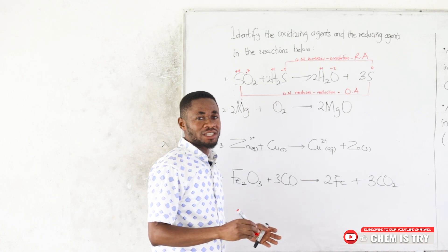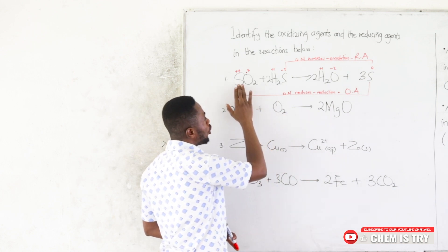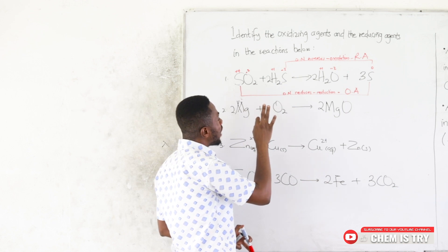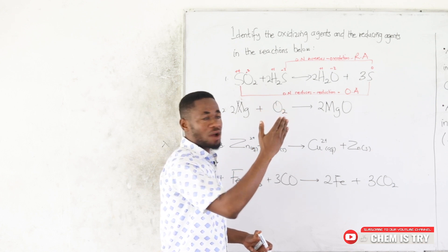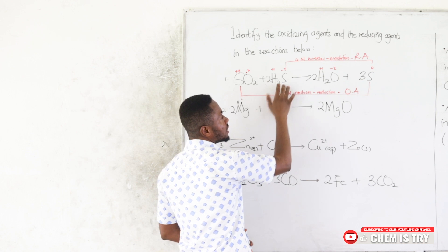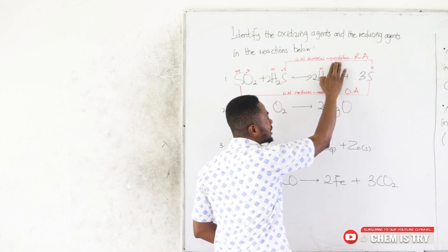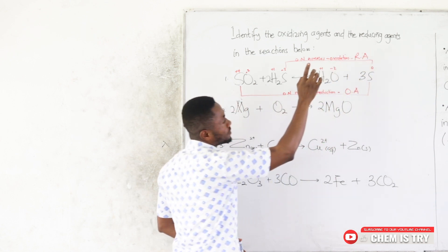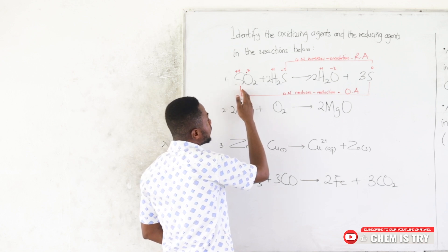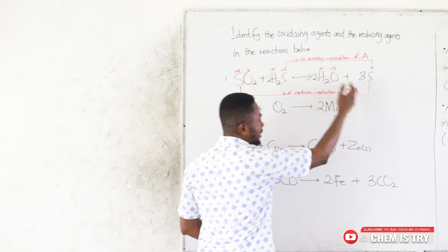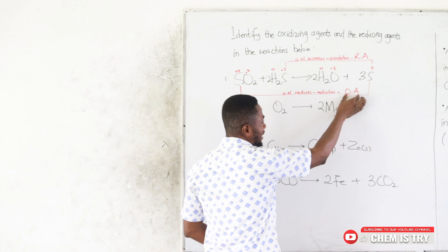To summarize: I checked the oxidation numbers, identified that sulfur in H₂S increased from −2 to 0 (oxidation → reducing agent), and sulfur in SO₂ decreased from +4 to 0 (reduction → oxidizing agent). That's the method.